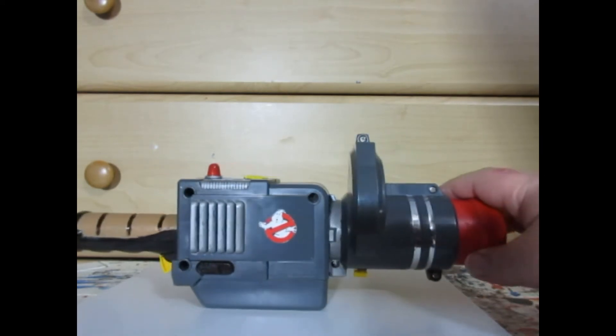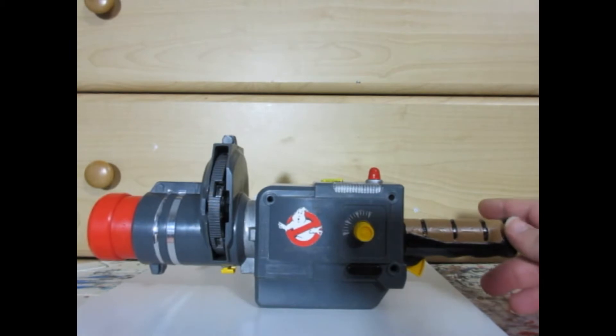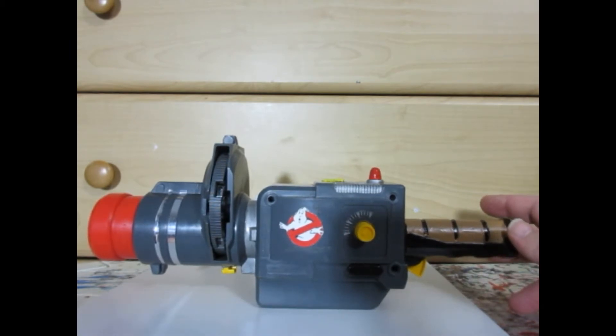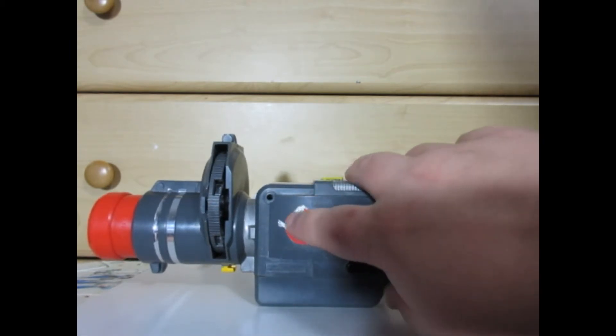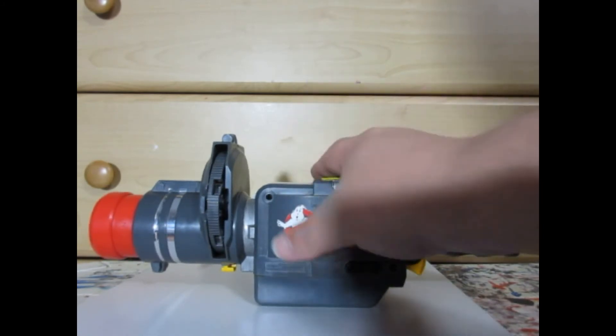Now, the labels I got were extra labels I got from the Ecto-1 set, a repro label set, which are pretty, very nice.